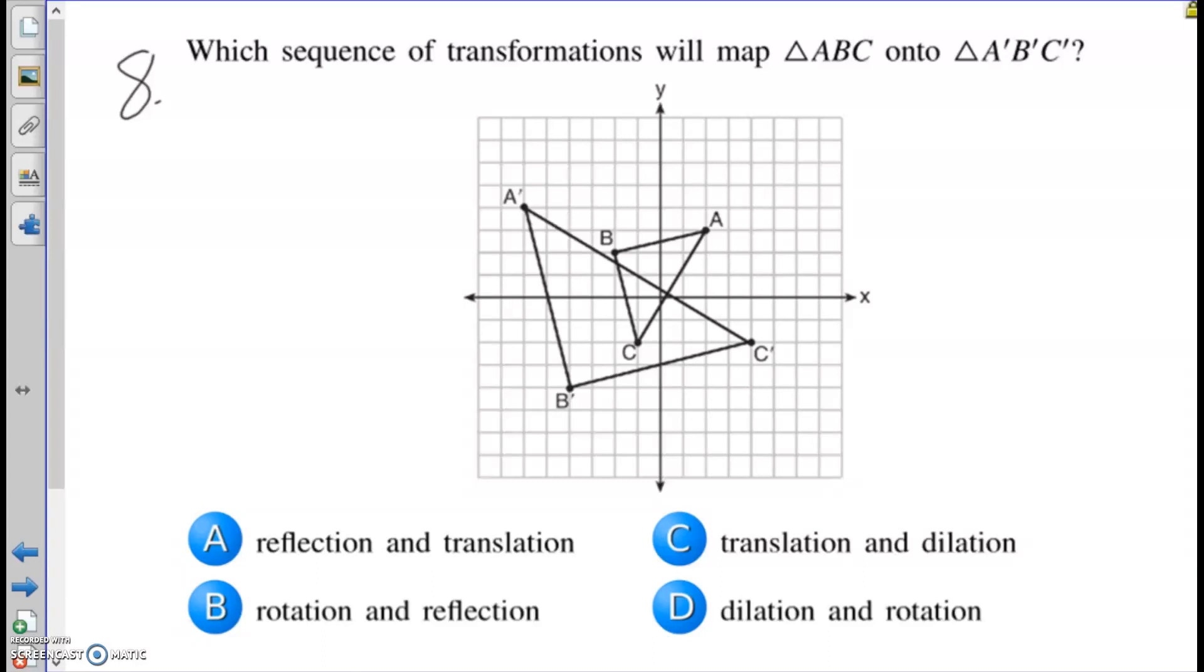Which sequence of transformations will map triangle ABC onto triangle A'B'C'? The fact that they look like they're different shapes right there tells me a dilation has to be involved. So anything that doesn't have a dilation, not going to be there.